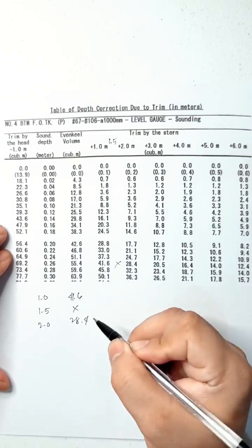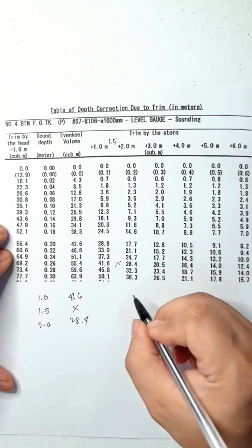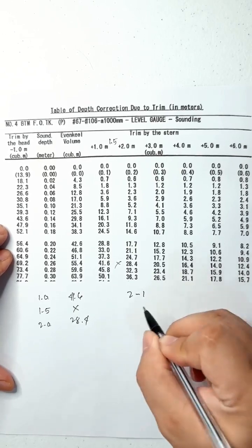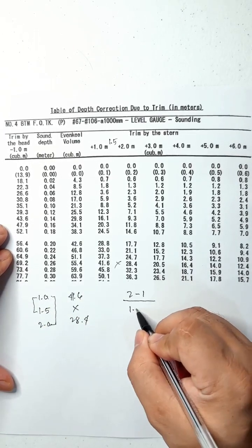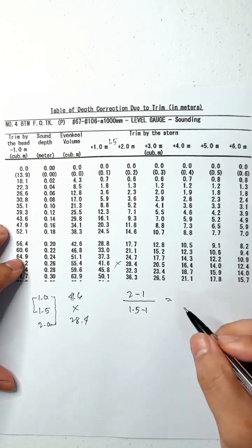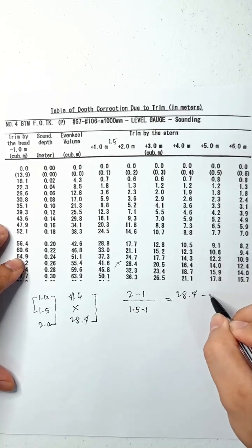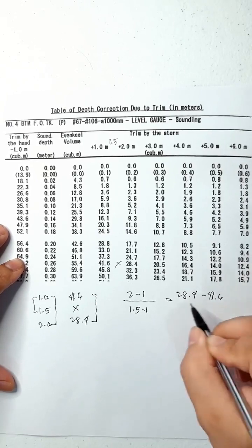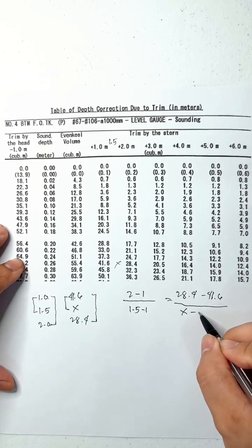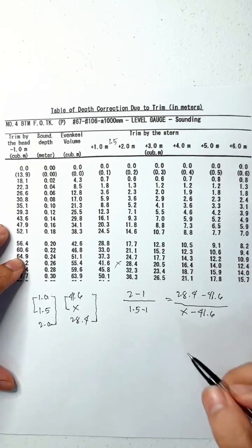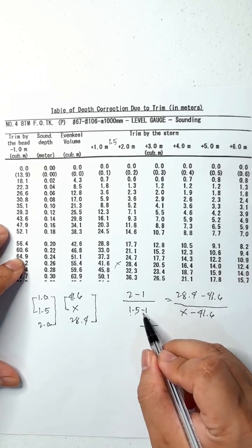By means of interpolation: (2 minus 1) over (1.5 minus 1) is equal to (28.4 minus 41.6) over (X minus 41.6). So 2 minus 1 equals 1, and 1.5 minus 1 equals 0.5.